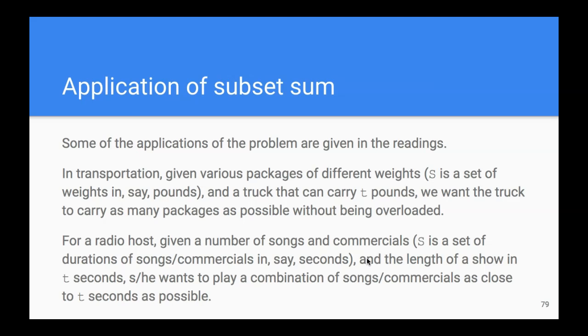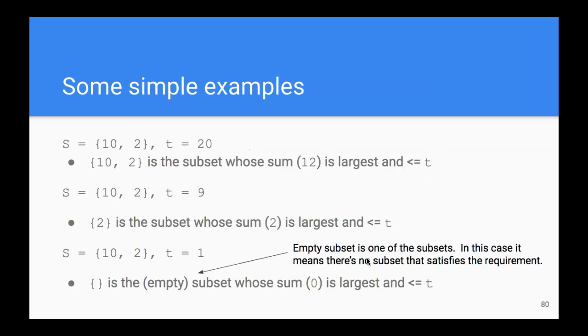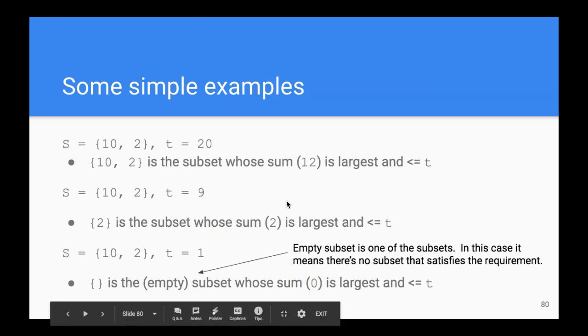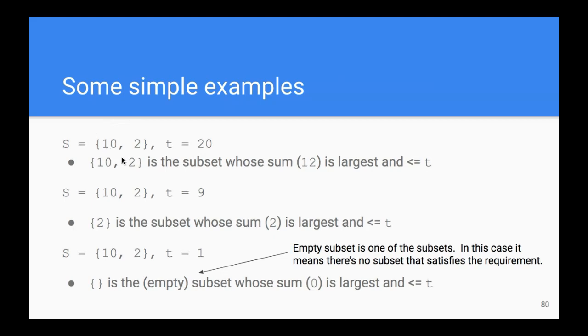Let's look at exactly what it means. Let's start with some very simple S and t. In the first one, S is just two numbers, 10 and 2, and our target is 20. The subset whose sum is the largest and still less than t is obviously all the numbers in this subset. 10 and 2 adds up to 12, which is still less than 20.